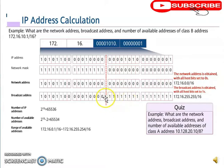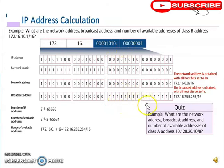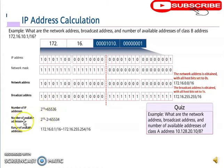To find the broadcast address, we set all host bits to one, giving 172.16.255.255. For total addresses: 2^16. For available addresses: 2^16 − 2. The range of addresses assignable to hosts starts from 172.16.0.1 all the way to 172.16.255.254.